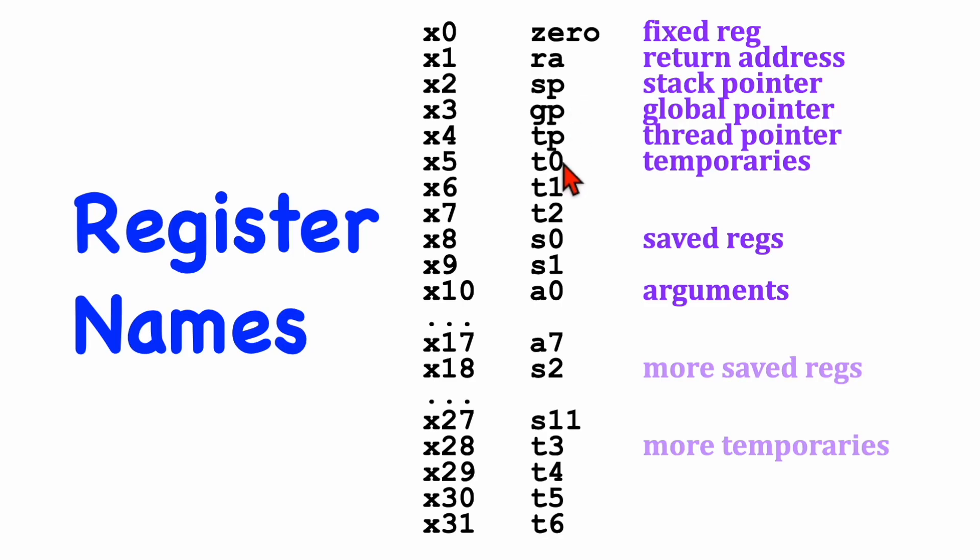We see some temporaries with names like T0, T1, and so on. We see some saved registers with names like S0, S1, and so on. And we see some arguments with names like A0 through A7. And then down here we have some more saved registers and we have some more temporary registers. Now we're going to look at each of these registers in a little bit more detail and see how they are used.